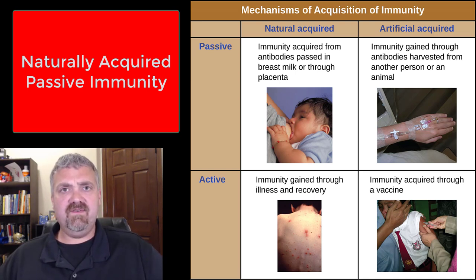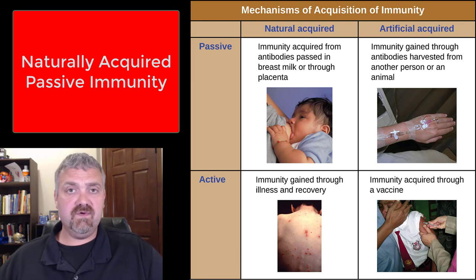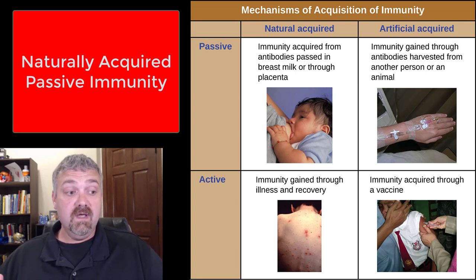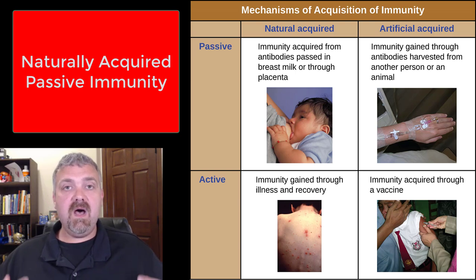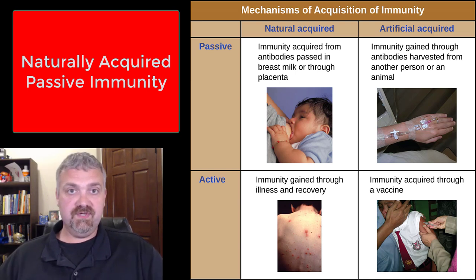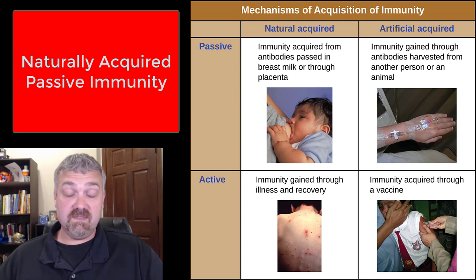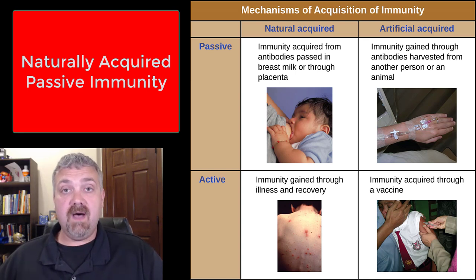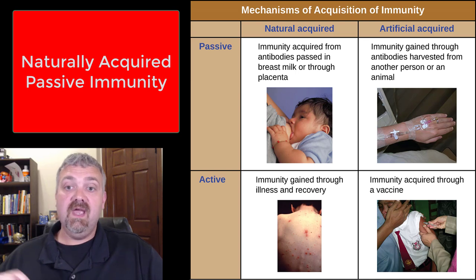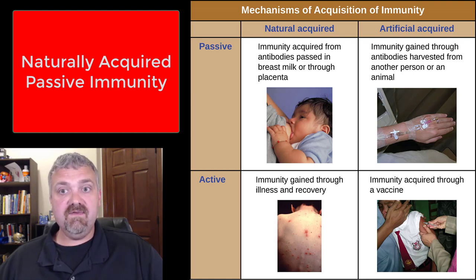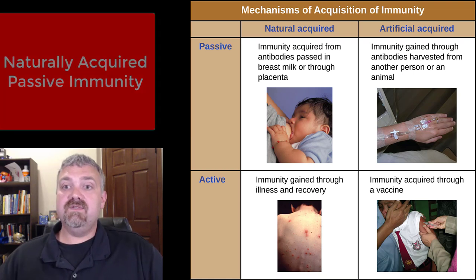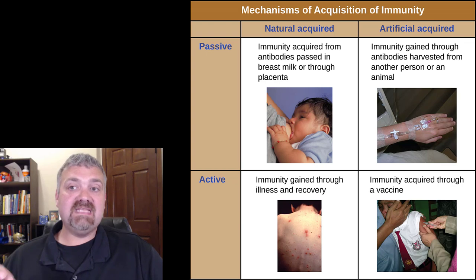Babies don't really have a developed immune system, especially in those first six months. Part of the reason why that hasn't been a problem across our evolutionary history is that mom has loaned her immune system to the baby through breastfeeding — or historically, a wet nurse. Mom was exposed to antigens, mom made antibodies against those antigens, and then mom gave them to the baby. That's one of the main benefits of breastfeeding: you're being given antibody therapy. That's naturally acquired passive immunity.